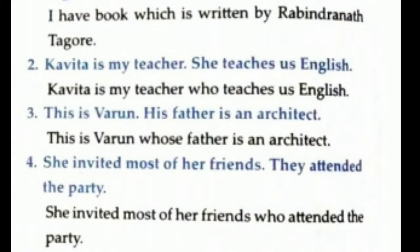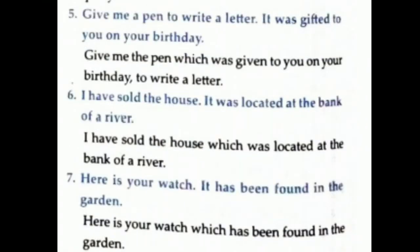Third: 'This is Varun. His father is an architect.' Answer: 'This is Varun whose father is an architect.' Here 'whose' is the relative pronoun. Fourth: 'She invited most of her friends. They attended the party.' Answer: 'She invited most of her friends who attended the party.' Fifth: 'Give me a pen to write a letter. It was gifted to you on your birthday.' Answer: 'Give me the pen which was given to you on your birthday to write a letter.' Sixth: 'I have sold the house. It was located at the bank of the river.' Answer: 'I have sold the house which was located at the bank of the river.' Seventh: 'Here is your watch. It has been found in the garden.' Answer: 'Here is your watch which has been found in the garden.'